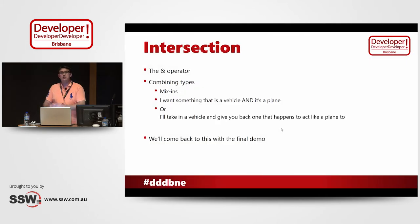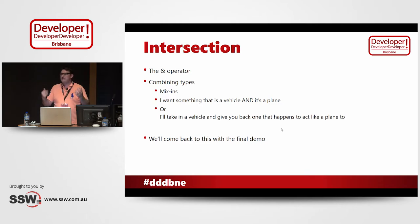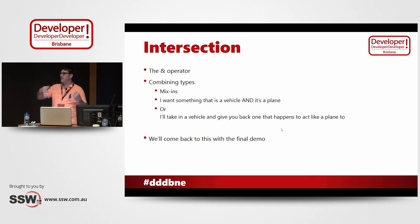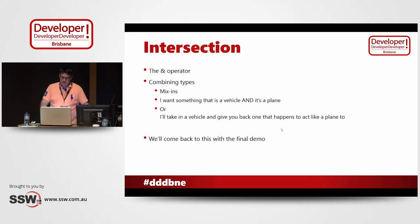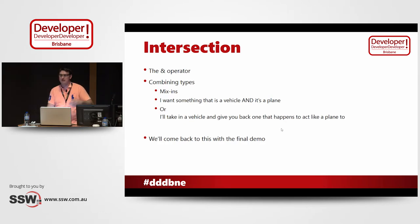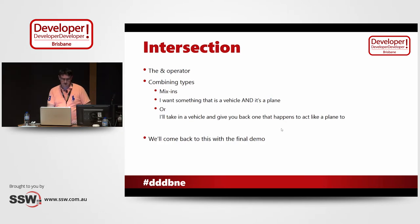We can also do the opposite — we can intersect types. That's like mixing things in. It's saying I've got a vehicle over here, and I've got something that can act like a plane, and I want to have something that covers both of those. It's almost widening your types. And we'll come back to that in the final demo, where we make a function which makes flying vehicles.